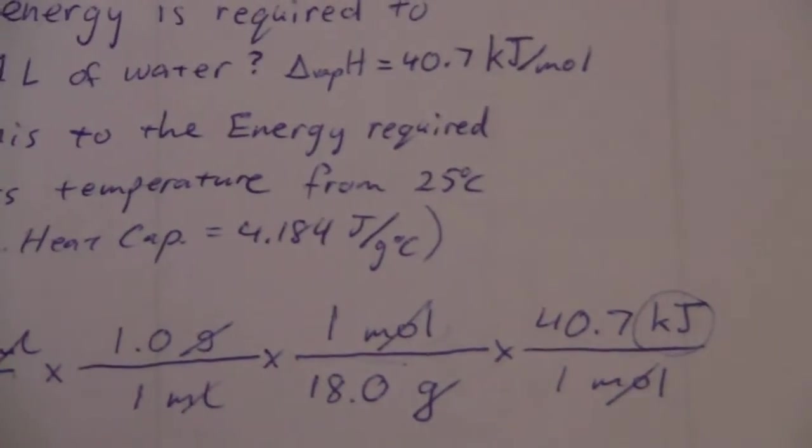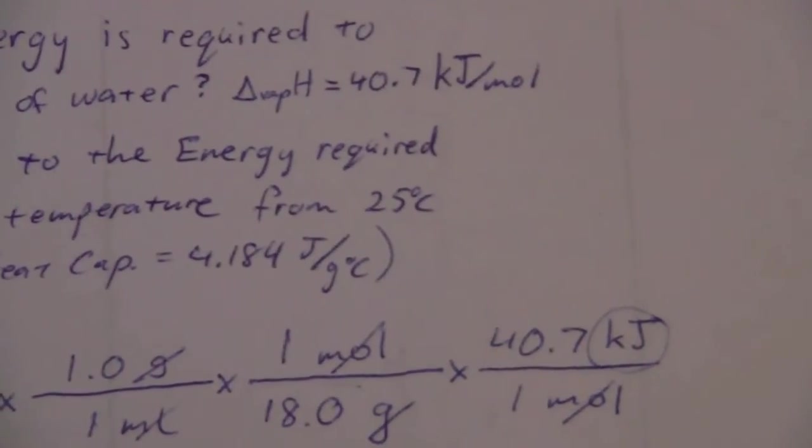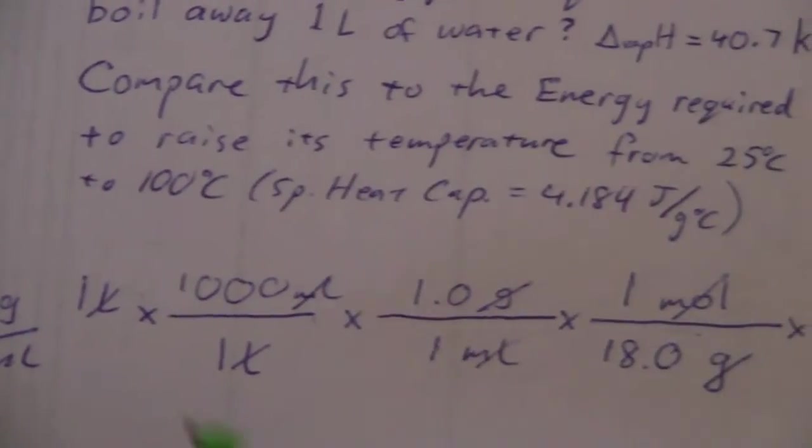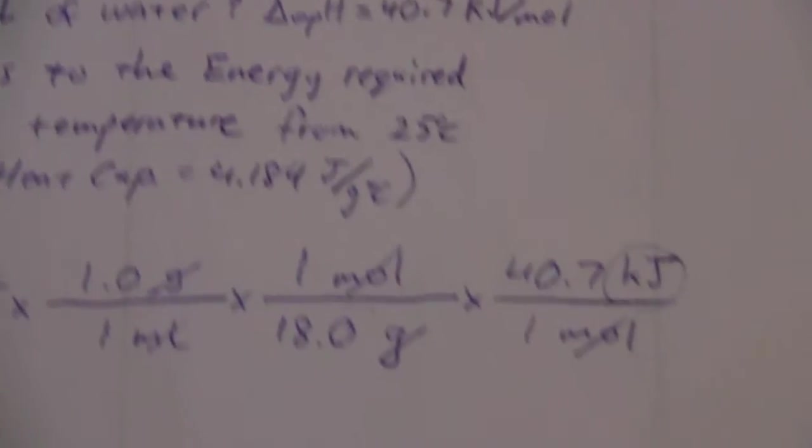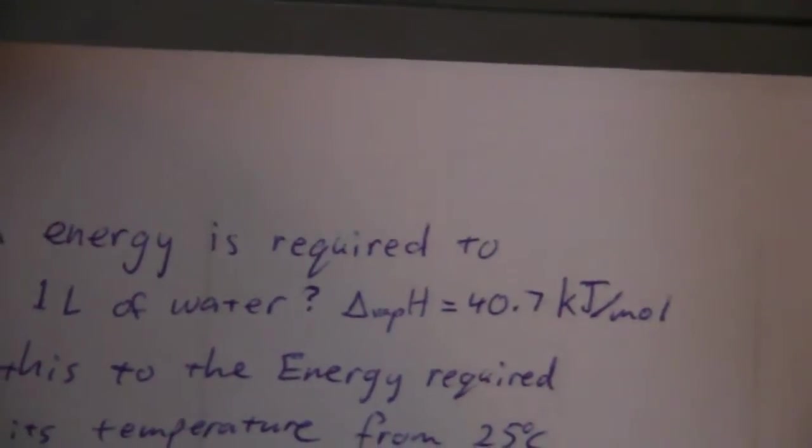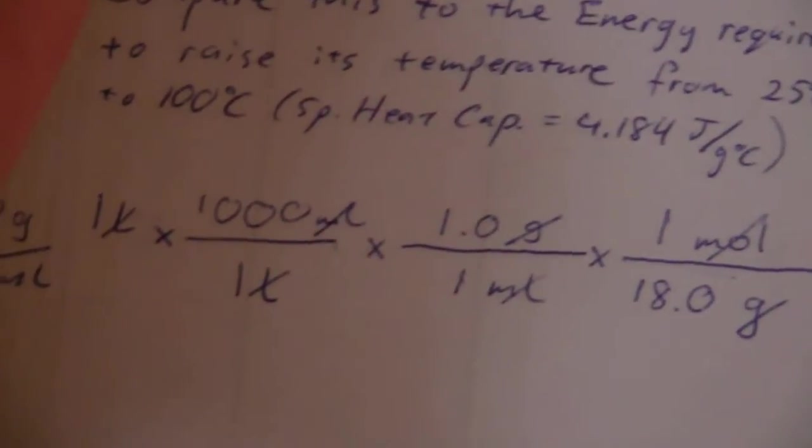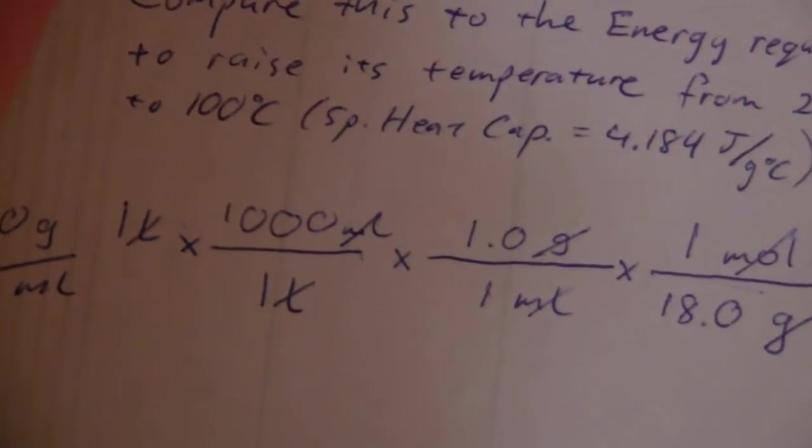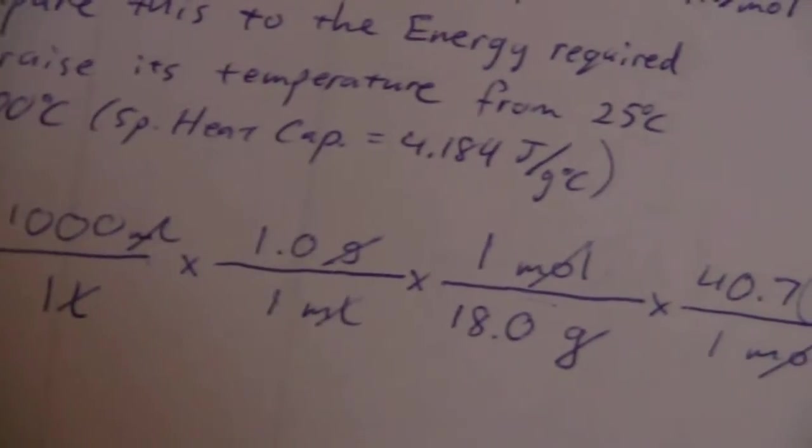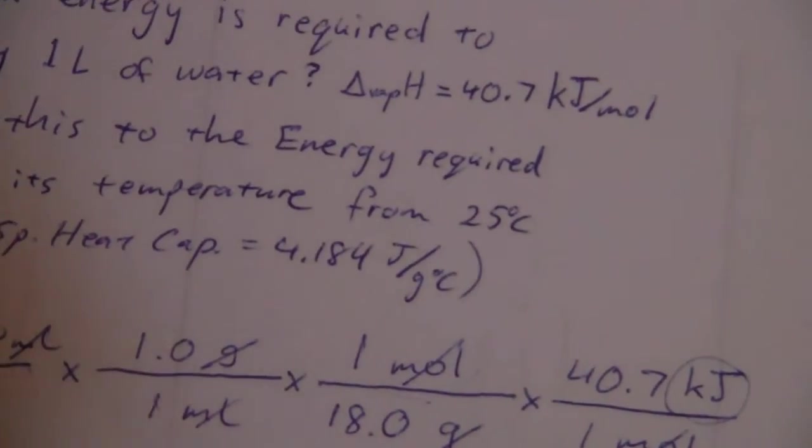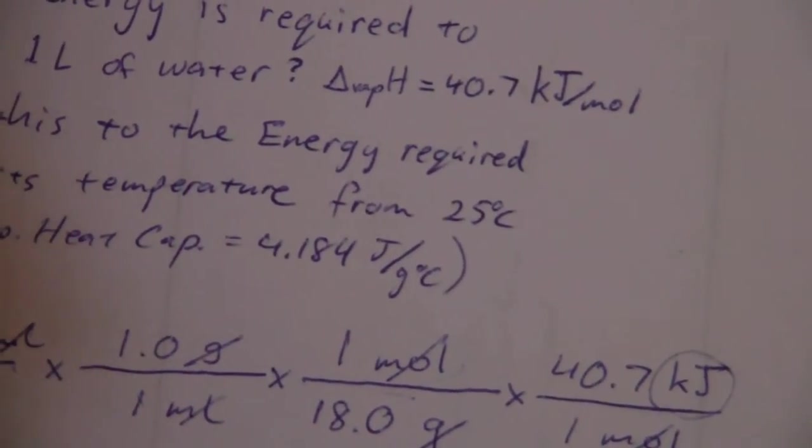And let's put that in the calculator. Everything is 1 except for the 18. So this is 40.7 kilojoules per mole divided by 18. So we have 1 liter times 1,000 milliliters per liter times 1 divided by 18 times 40.7. And we have 2,261.